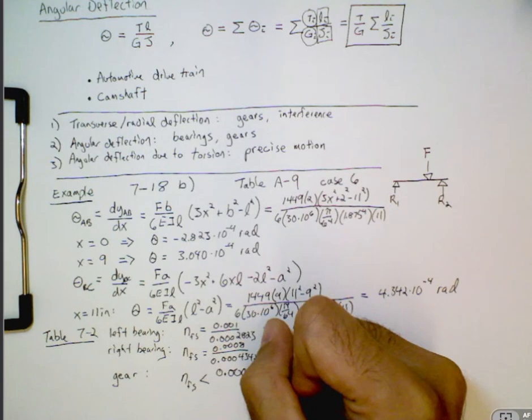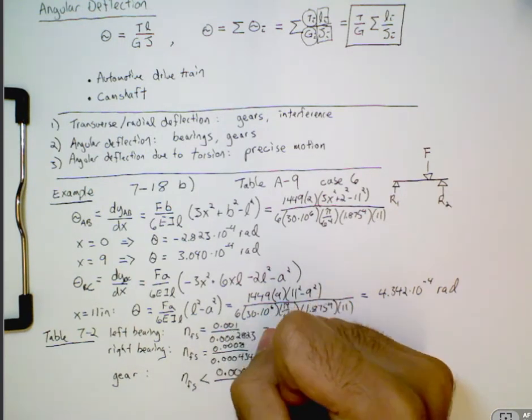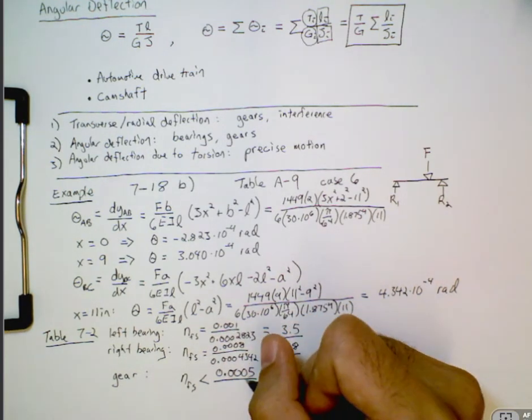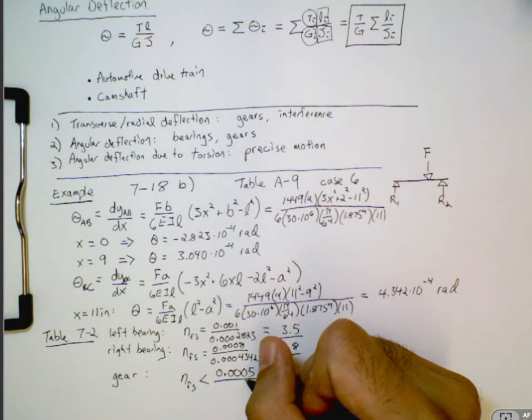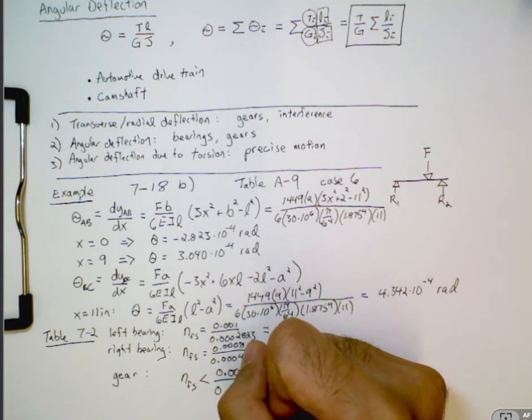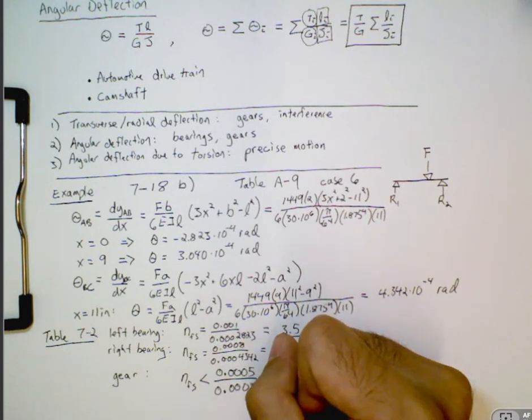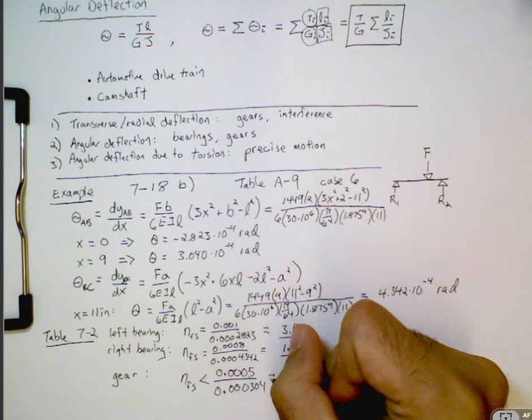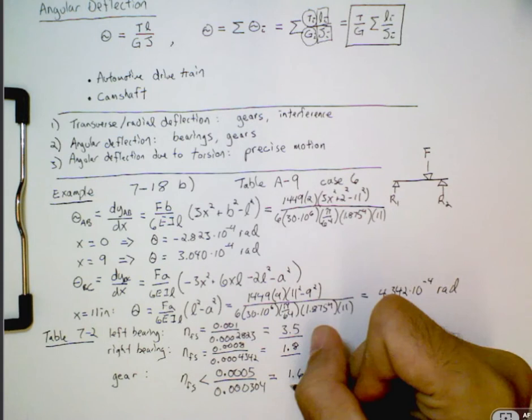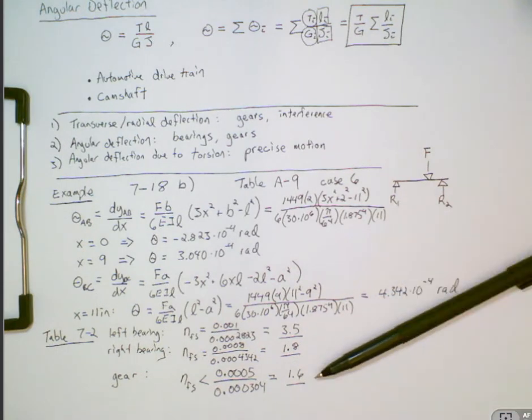Looking up the allowable slope in the table, it's 0.0005 radians. And then the actual slope was 0.000304, and it gives us 1.6. So that's getting a little bit small. It really depends on the application, and it depends on what happens with other gear. So if it deflects substantially, then maybe we have to redesign the shaft. Maybe the angular deflection is not going to be good enough.